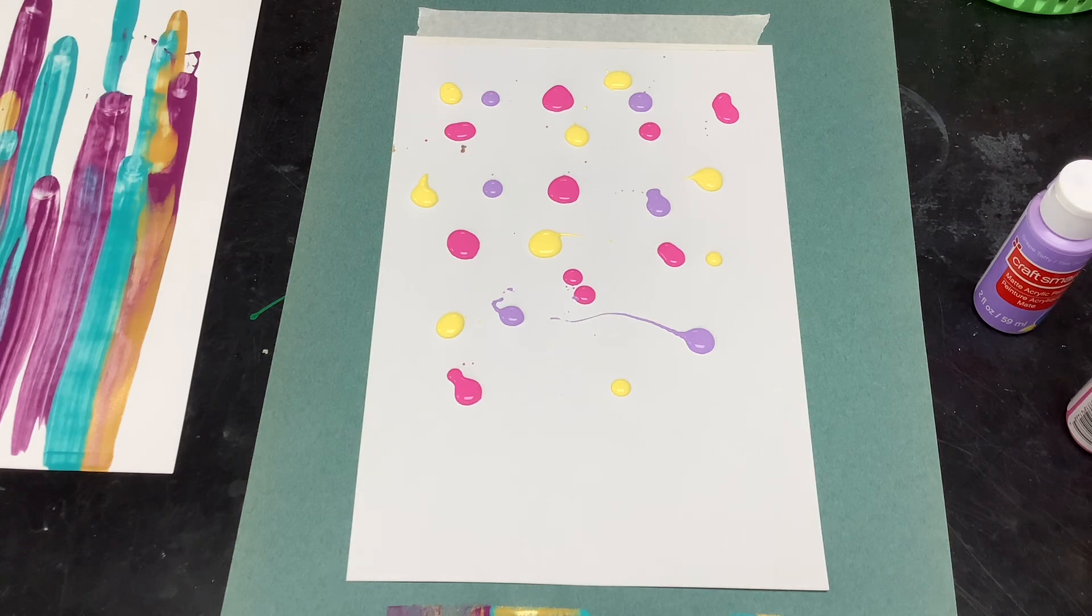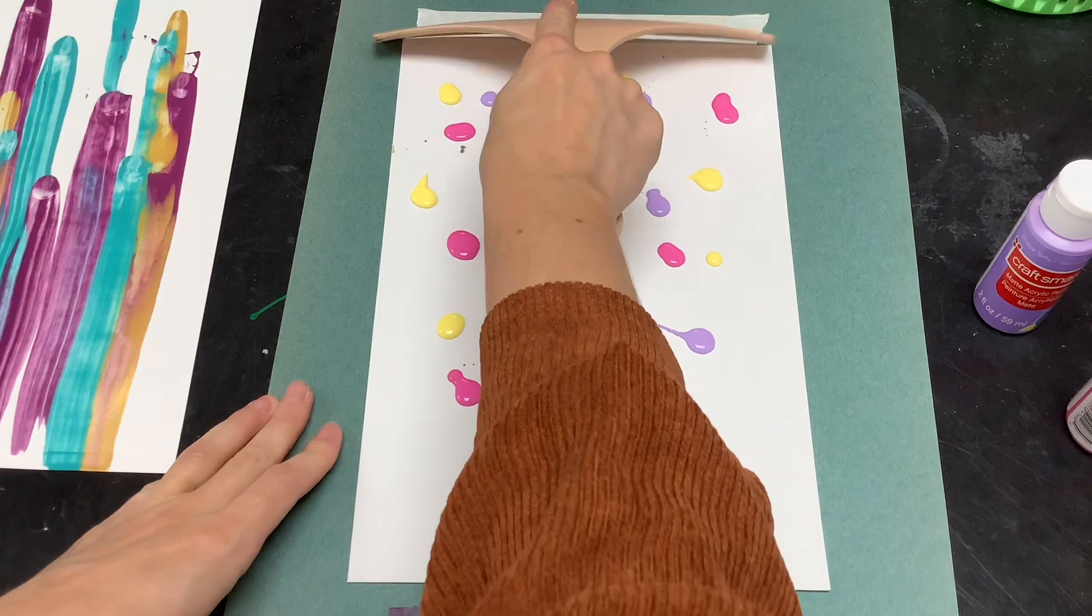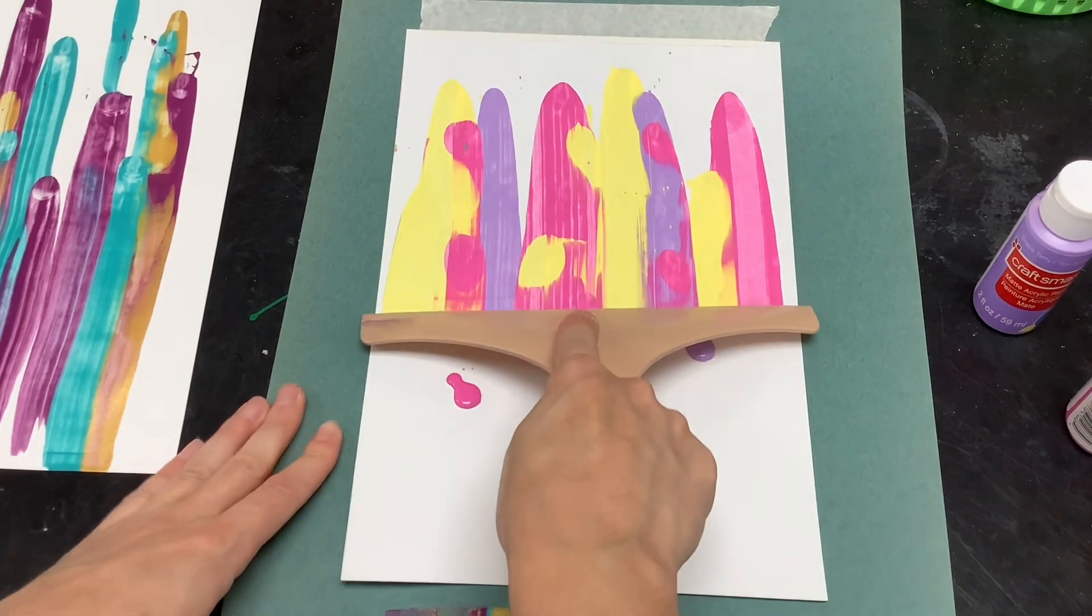Then again you will get your squeegee, holding it tightly and pulling the paint down.